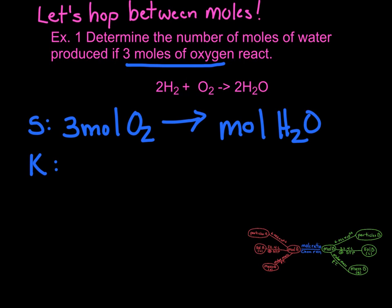So we build our equality here for our known. If we look at the equation, the coefficient in front of oxygen is assumed to be one, and the coefficient in front of water is two. So we build our equality like that. For every one mole of oxygen that reacts, we produce two moles of water.